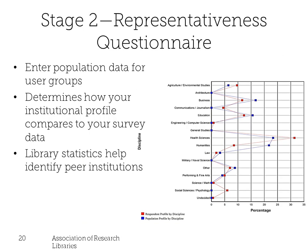In your results report, ARL provides an analysis of how well your respondent sample represents your overall campus population. To do this, we ask you to fill out a representativeness questionnaire, where you provide population data for your user groups and discipline areas. This becomes available in stage two. A representativeness chart shows the population in each discipline area as a percentage of the overall campus population alongside the number of respondents, indicating how well distributed responses are across disciplines.